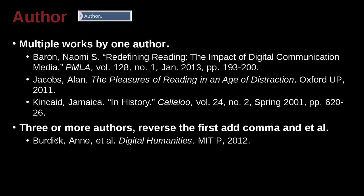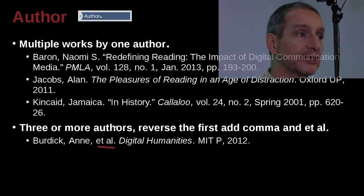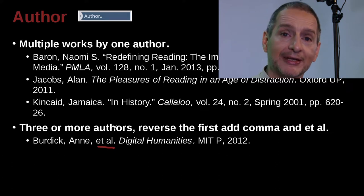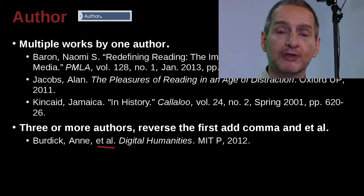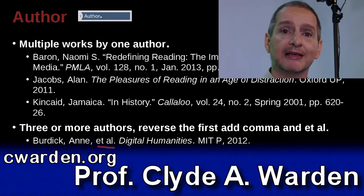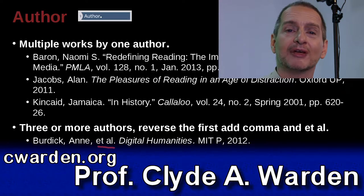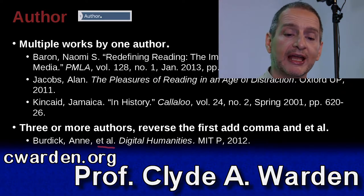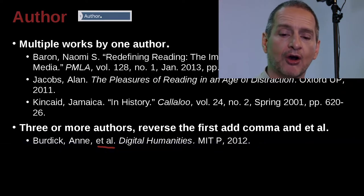Very clearly, Burdick, Anne — and what happens? We just change the other authors to et al. Now this is inside the reference list. We've already looked at the inline citation in the text, where we can use et al. But here in the reference list, at the end of your research paper, dissertation, or thesis, you have this list. And it's the same rule: if it's three or more names, then you just condense it to et al.